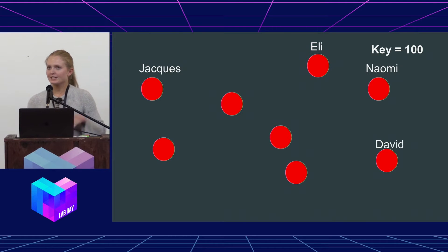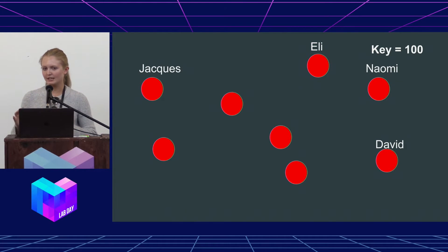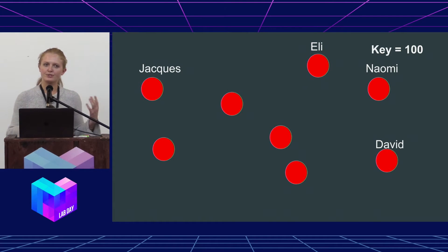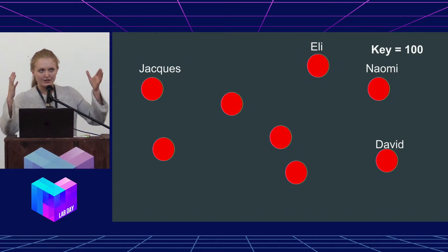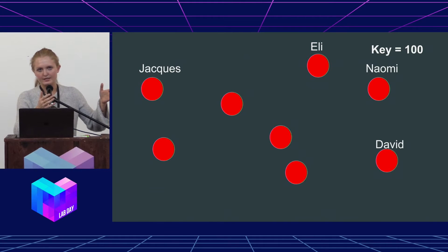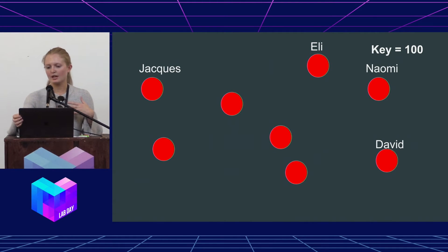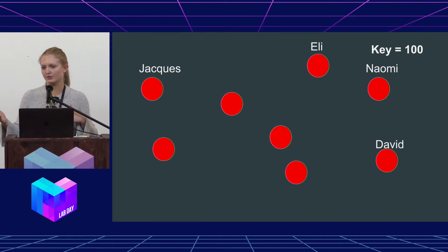So what is a distributed hash table? It's just like a hash table, except it's distributed and each node corresponds to a key. So a node's address will hash — every time a key is hashed, it'll correspond to a node's address. So let's say, for example, we have key 100 — whoever's node address is closest to 100, that'll correspond to that key.